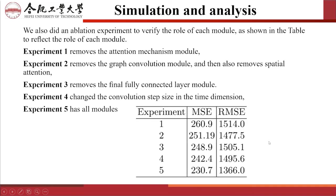We also did an ablation experiment to verify the role of each module, as shown in the table. Experiment 1 removes the attention mechanism module, Experiment 2 removes the graph convolution module and also removes the spatial attention, Experiment 3 removes the final fully connected layer module, Experiment 4 changes the convolution step size in the time dimension, and Experiment 5 has all modules. Obviously, each module plays its own role.